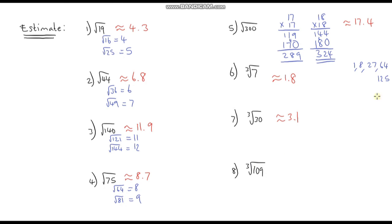The last one: cube root of 109. 4 cubed is 64 and 5 cubed is 125, so it's going to be between 4 and 5. It's closer to 5 than to 4, so let's go with approximately 4.7.